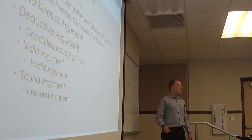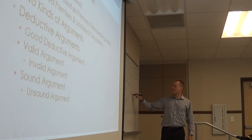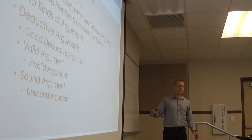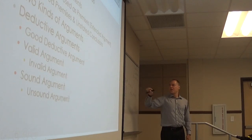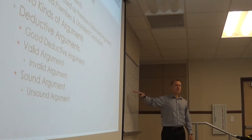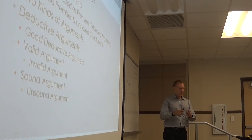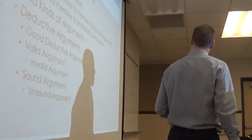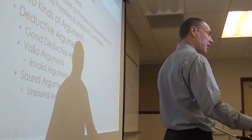This is a super common deductive argument called in Latin modus ponens, or known in English as affirming the antecedent — because P is the antecedent and Q is the consequent, and to affirm it is to say the antecedent is correct, so you derive the consequent. An example: if today is Tuesday then tomorrow is Wednesday; today is Tuesday; therefore tomorrow is Wednesday.